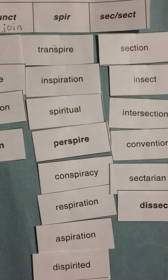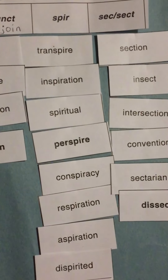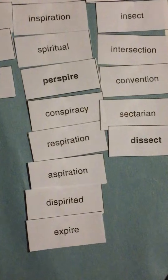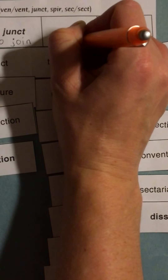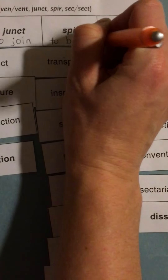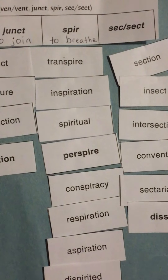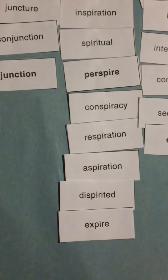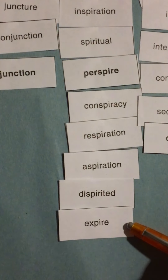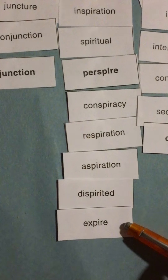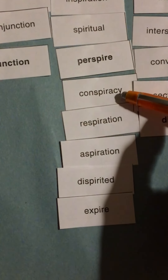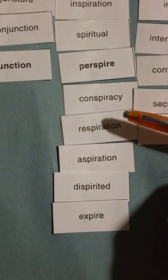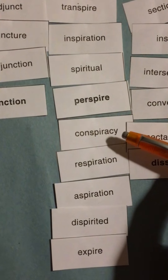Spire means to breathe. Remember that little 'e' at the end. A couple of things to note. You know how your milk will expire — you don't want to use it anymore. It literally means to breathe out, for the last time. Conspiracy means to breathe with, as in you have a strong relationship with someone — like to conspire together.